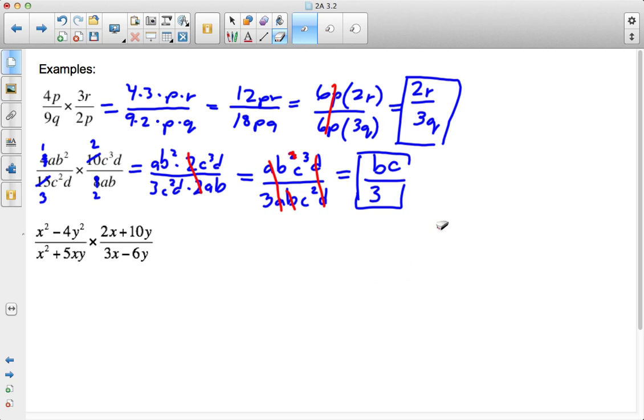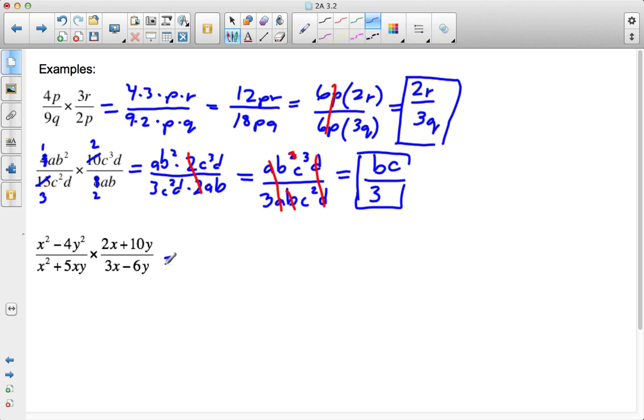All right, let's take a look at this last problem for multiplication. So what I see is I have (x²-4y²)/(x²+5xy) times (2x+10y)/(3x-6y). So first thing I'm going to go ahead and do is factor. I know x²-4y² is a difference of squares, so that's (x+2y) times (x-2y). If you don't remember how to factor a difference of squares, go ahead and look back on the video on factoring special products. And x²+5xy has a common factor of x, and what I'm left with is x(x+5y).